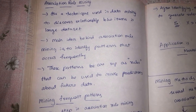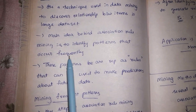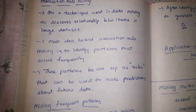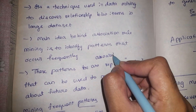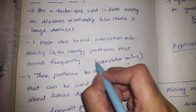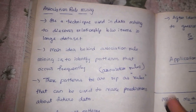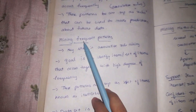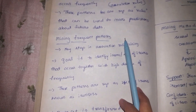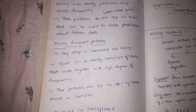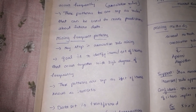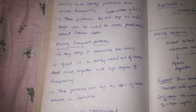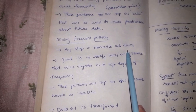The main idea behind association rule mining is to identify the patterns that occur frequently. These patterns are called association rules, and these rules can be used to make predictions about future data. In association rule mining, we try to find frequent patterns with the help of these association rules.